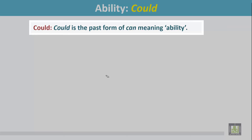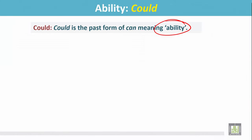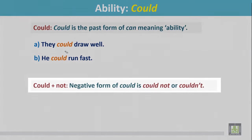They could draw well. He could run fast. He could run fast at a certain time in the past. This is his past ability. The negative form of could is could not or couldn't.